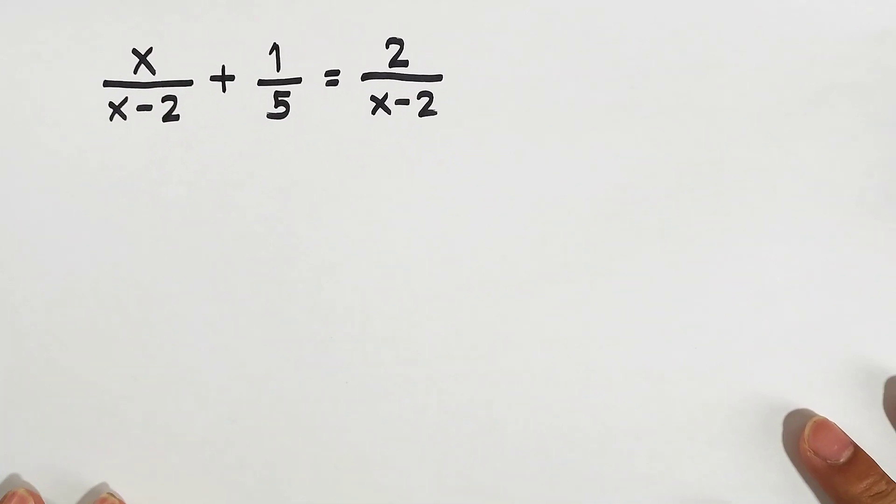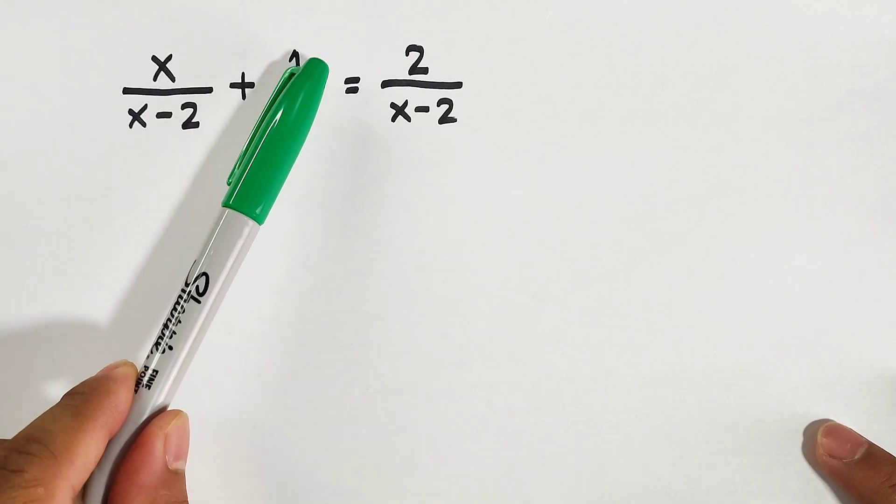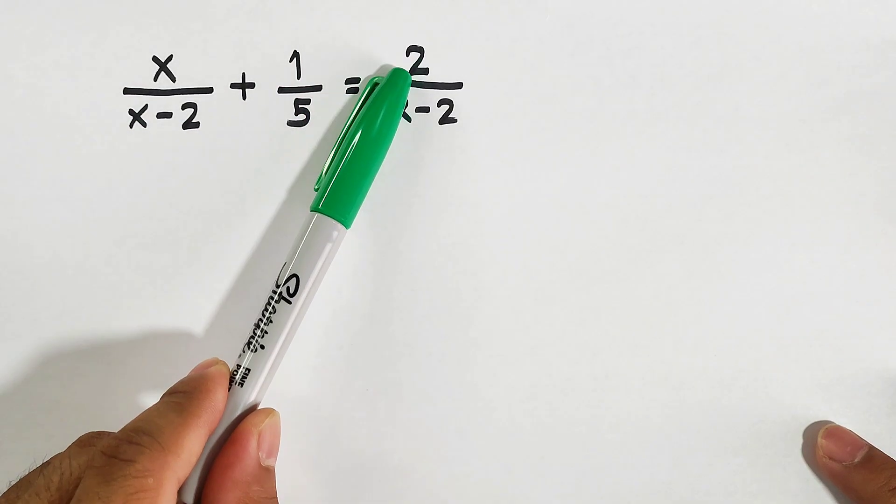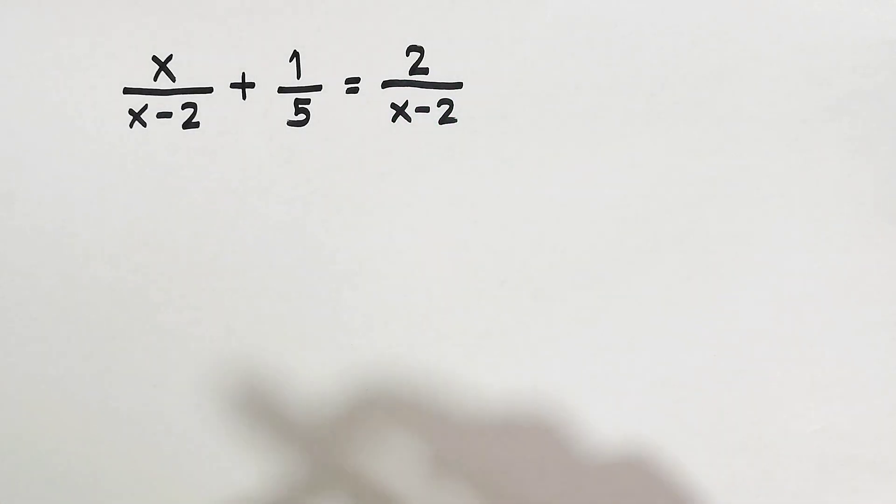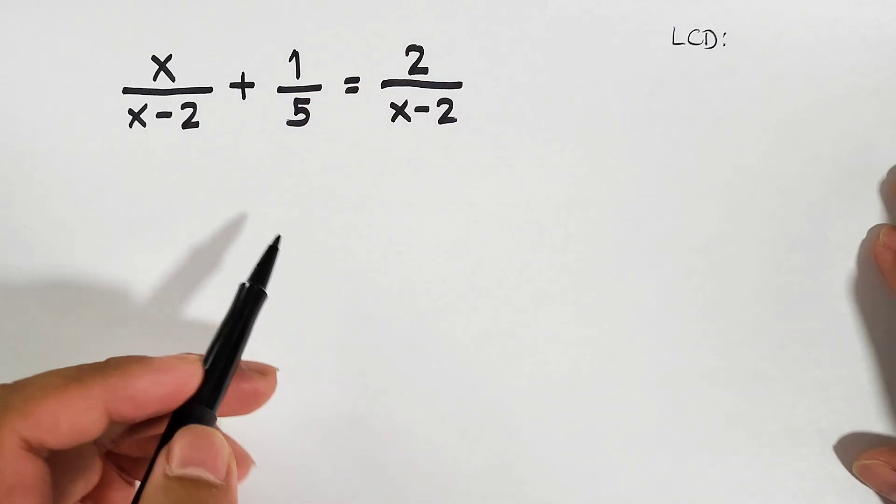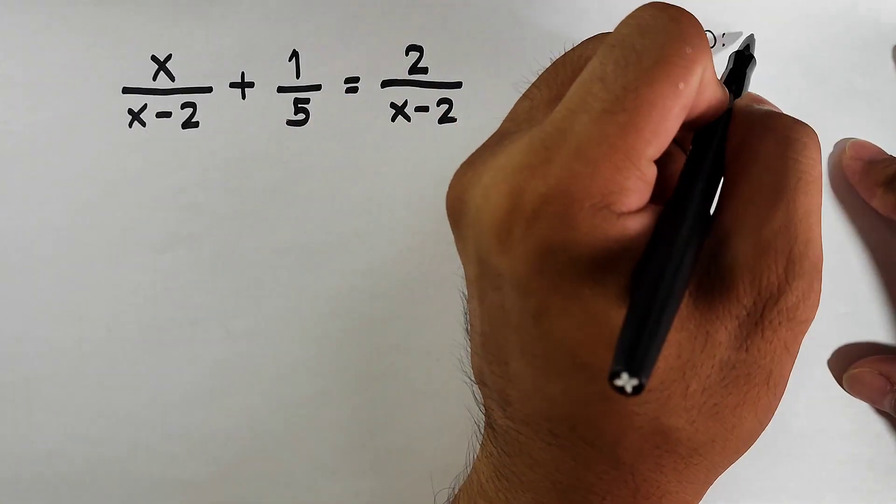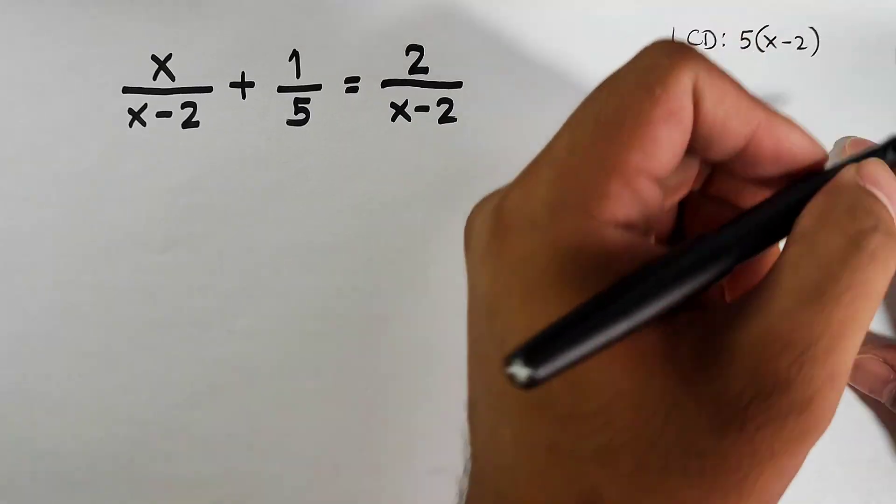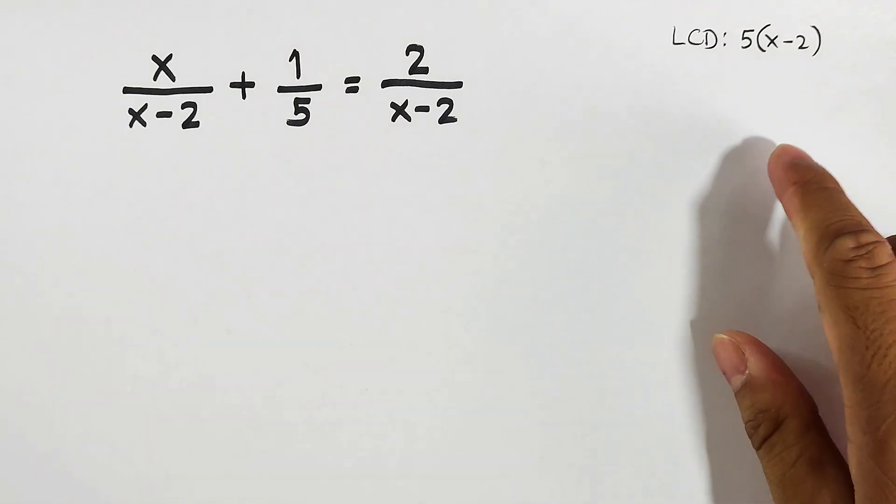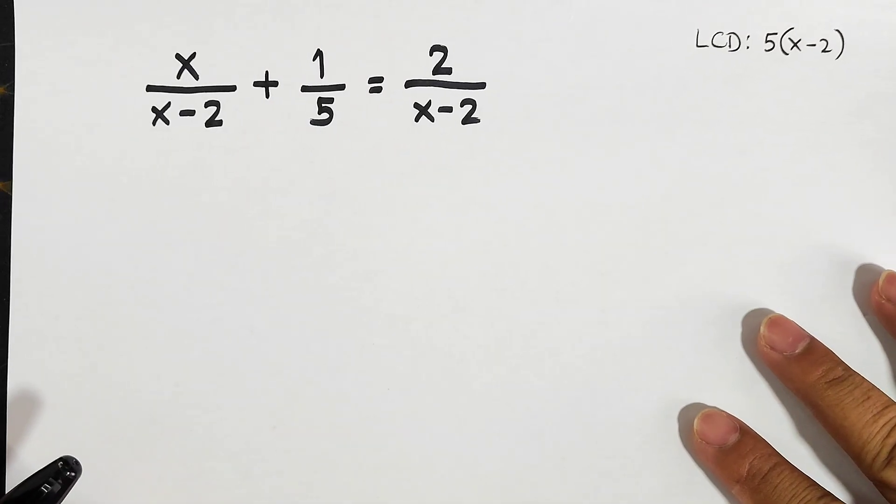As you can see, what we have here is x over x minus 2 plus 1 over 5 equals 2 over x minus 2. We need to find the LCD. Since we have the same x minus 2 and this is 5, our LCD is 5 times x minus 2. This entire expression will be multiplied to the given rational equation.